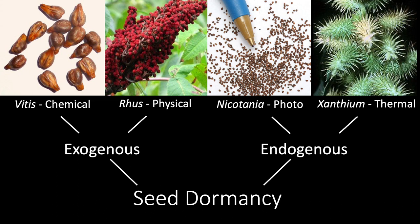Think about something like Rosa, which has physical dormancy — an impermeable seed coat preventing water from getting in. Once water gets in, it will germinate. That impermeable coat gets broken by fluctuating temperatures, freeze-thaw cycles, or by passing through the digestive tract of an animal. Nicotiana — tobacco — can have germination triggered by photodormancy: when it gets the right pattern of light, it will germinate. Similarly, Xanthium breaks dormancy when it gets the right temperature. These are all strategies for the plant to time when it wants to germinate, waiting for the right conditions.